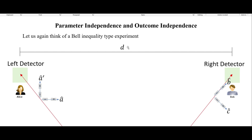In this video I'm going to discuss what is called parameter independence and outcome independence. In the previous videos on Bell's theorem, I've essentially been saying that what Bell's theorem and the experiments that test it show is that there can be no local hidden variables. But there is kind of a caveat, and that's this idea of parameter independence in particular, but parameter and outcome independence.